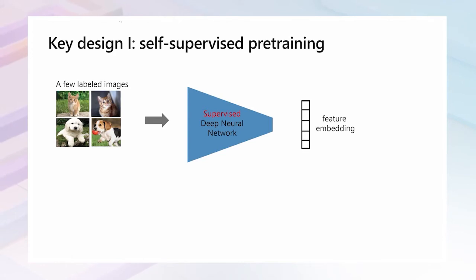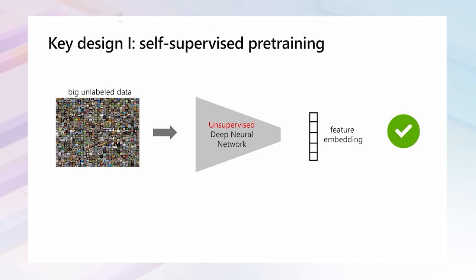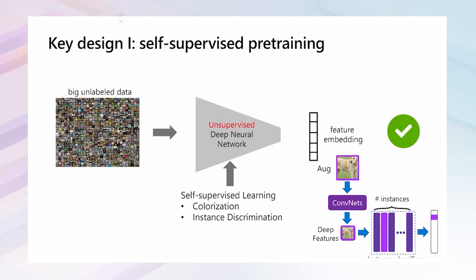The first key design is self-supervised pre-training. In supervised learning, performance is poor due to few labeled signals. Our proposal is to leverage huge unlabeled data for pre-training. We tried two methods: the first is colorization, where the input is a gray image and the task is to convert it to a color image. The second method is instance discrimination, which treats each single image as a class and trains the model by an instance classification task.